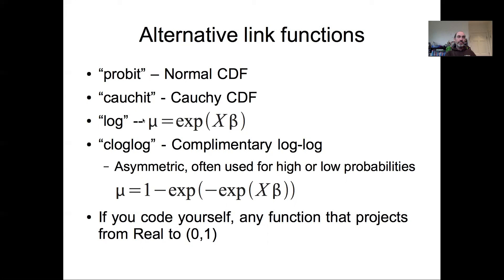We could alternatively choose a log link function, which has some danger because it'll choose parameter values that make sense over the range of the data you have, but obviously could extrapolate to probabilities greater than one. And then there's this complementary log-log, which unlike the probit and the cauchit, is sigmoidal but not necessarily symmetric, and often is chosen when you have values that are very high or very low probabilities. So it's more sensitive in those regions.